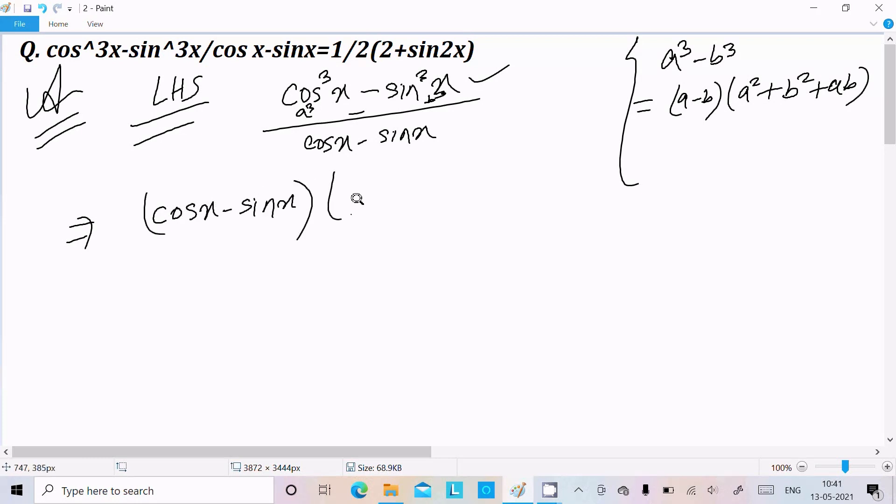Now a² plus b² plus ab: cos²x plus sin²x plus cosx times sinx. Now in the denominator, cosx minus sinx is there. So this term and this term are the same, they cancel.